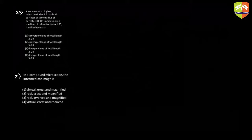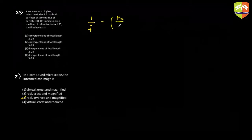In a compound microscope, the intermediate image is inverted, real, and magnified — this is straightforward knowledge from NCERT. Question 20 is on the lens maker's formula: 1/f = (μ₂/μ₁ − 1) × (1/R₁ − 1/R₂). We have a concave lens with refractive index 1.5, and same radius of curvature R on both sides, so R₁ = −R and R₂ = +R.